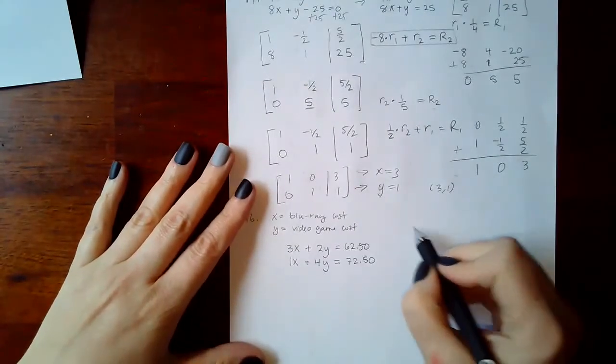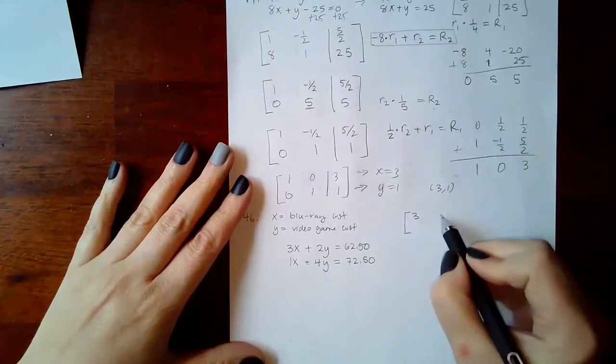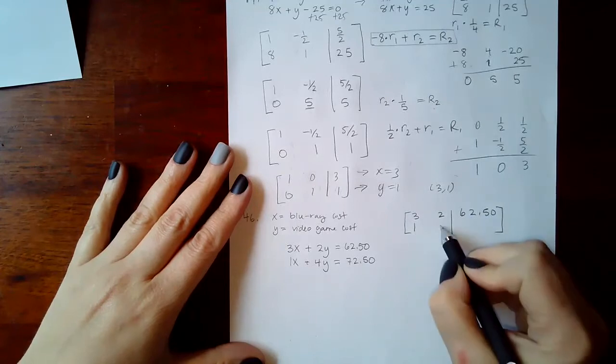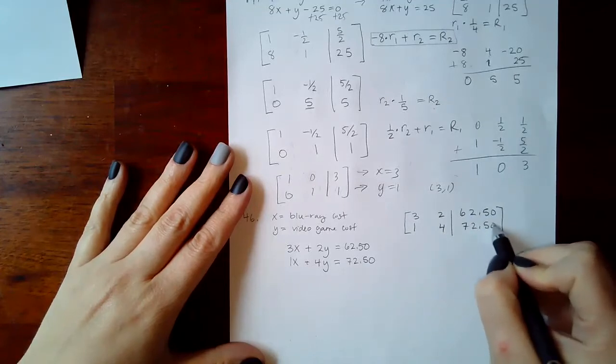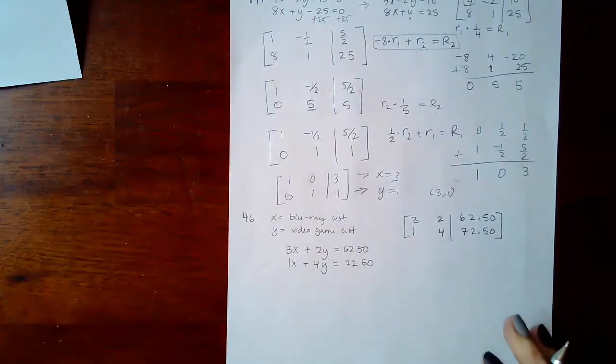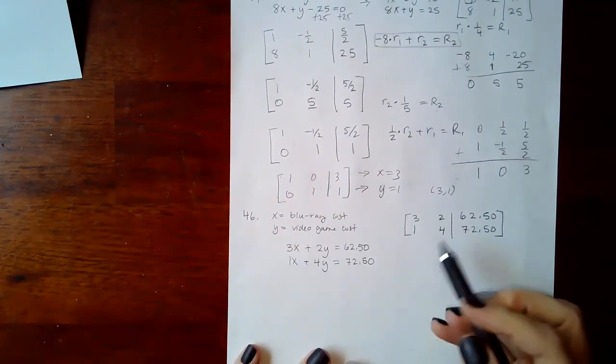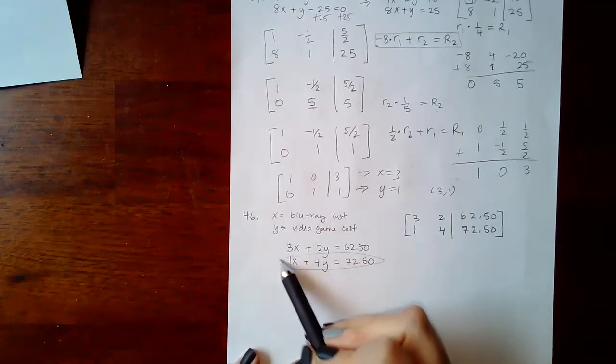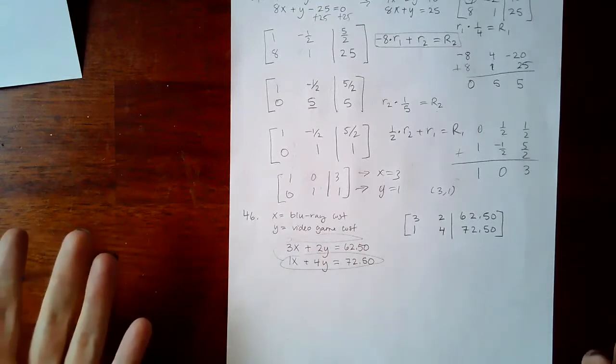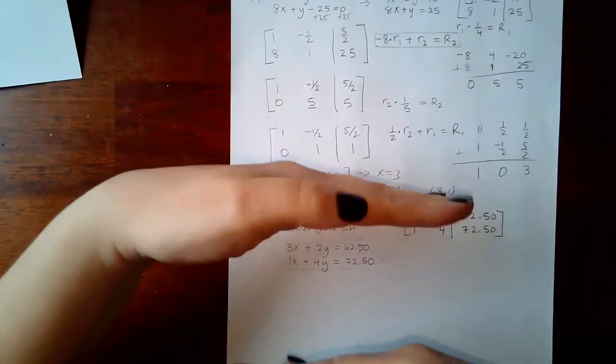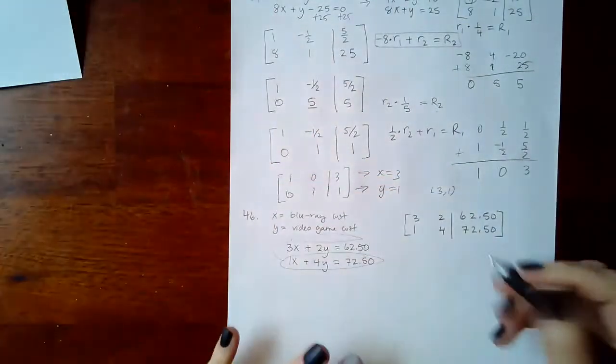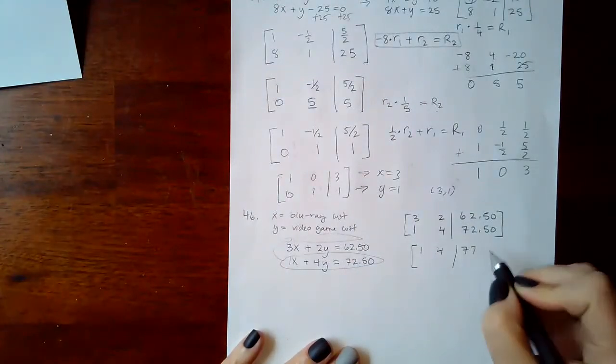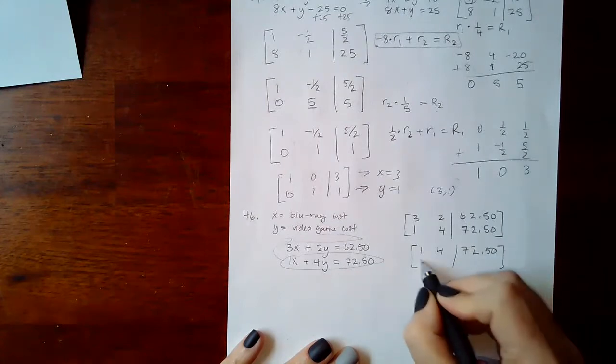We just have to solve this equation. Let's put it first in our matrix form, so we get 3, 2, 62.50, 1, 4, 72.50. Then we can solve this. Actually, to avoid fractions, we can interchange rows. It's the same as writing this row above the other row. Nothing really changes the system. To save myself some time and maybe even some fractions, we're just going to swap the whole rows out.